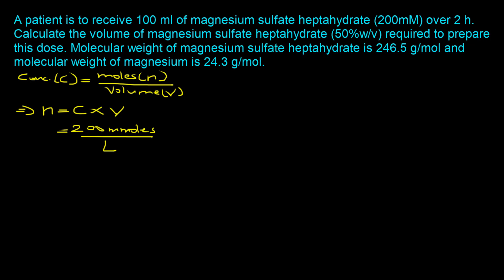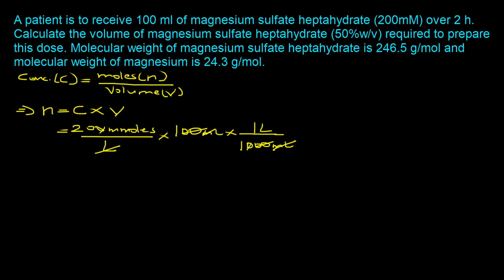We need to multiply the concentration by the volume, but the volume must be in liters. We have 100 milliliters, so we convert using the factor that 1000 milliliters equals one liter. The milliliters cancel out, and we end up with 20 millimoles.